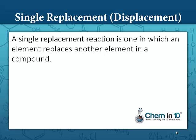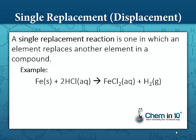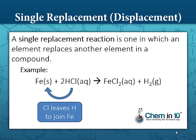A single replacement reaction is one in which an element replaces another element already in a compound. Here we have iron metal reacting with hydrochloric acid. The iron replaces the hydrogen in hydrochloric acid, forming iron chloride, and the hydrogen goes off by itself. It's sort of like iron came to the dance party stag — hydrogen and chloride were a couple — and iron hooks up with chlorine and hydrogen is left out of the loop.